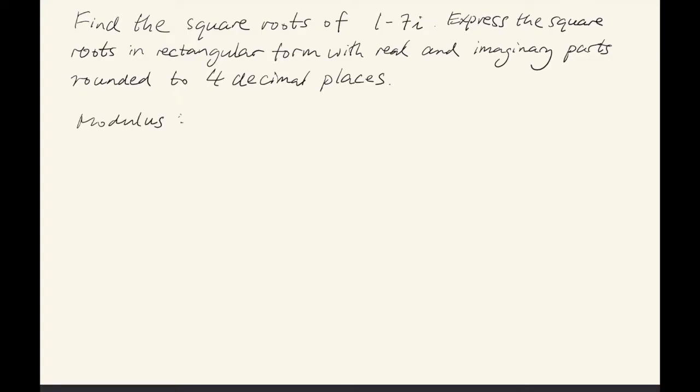To find the modulus, we take the square root of the real part squared plus the imaginary part squared. That works out to be 1 plus 49 under the square root, so the square root of 50. We'll just leave it like this for now.